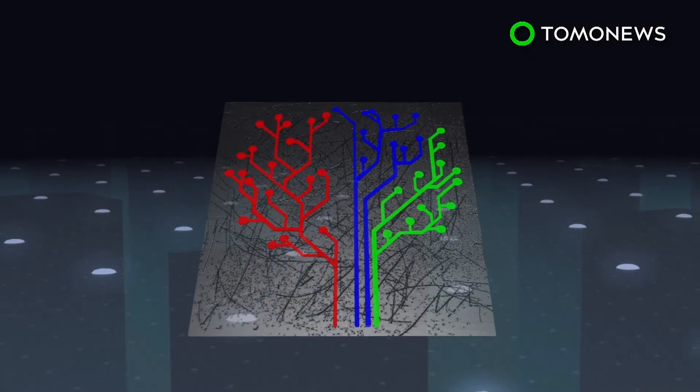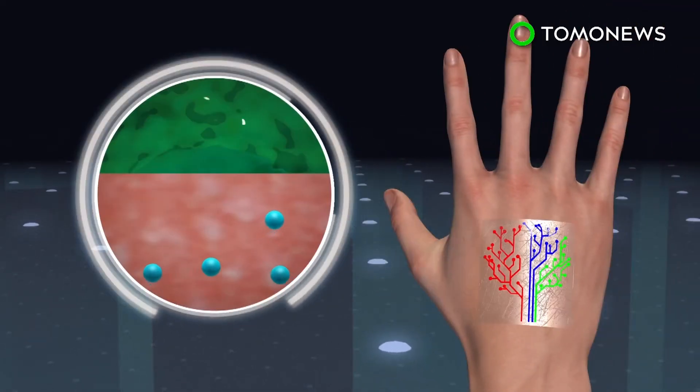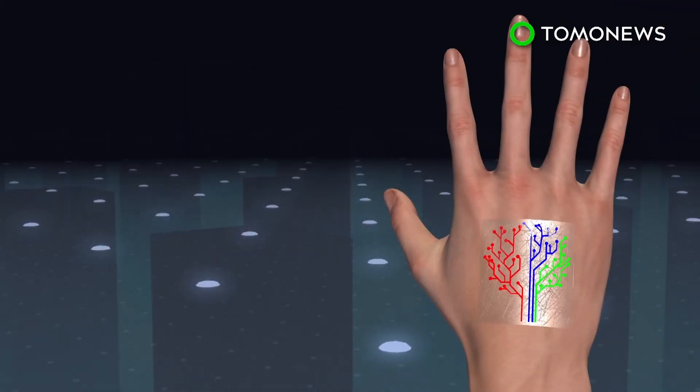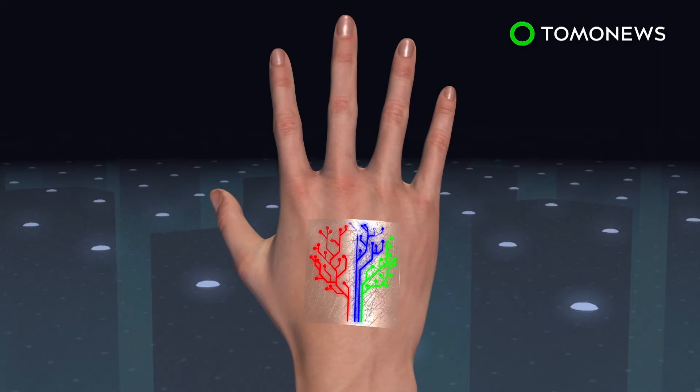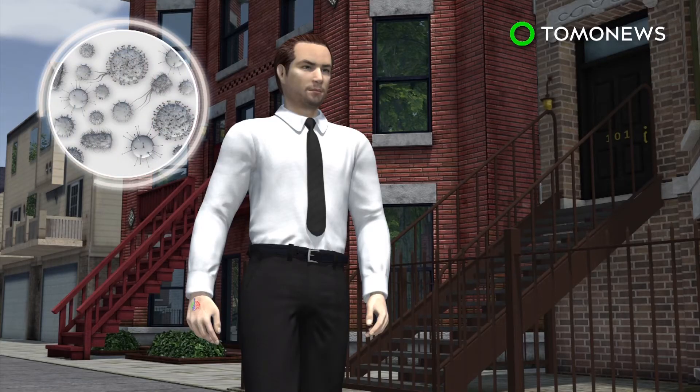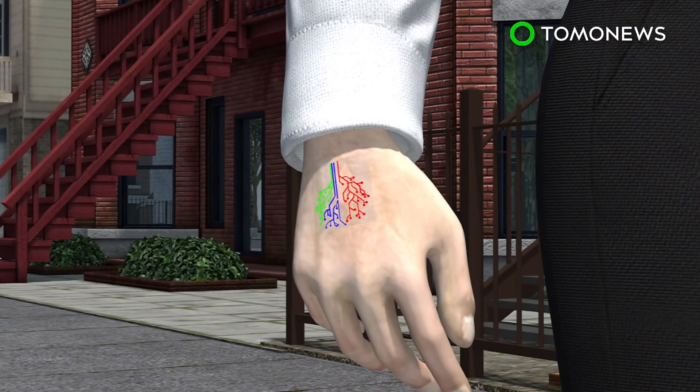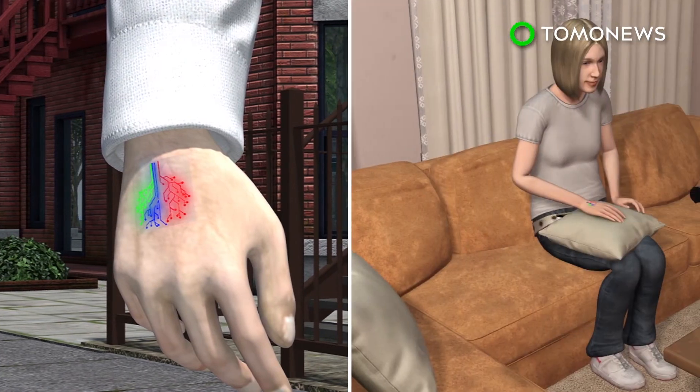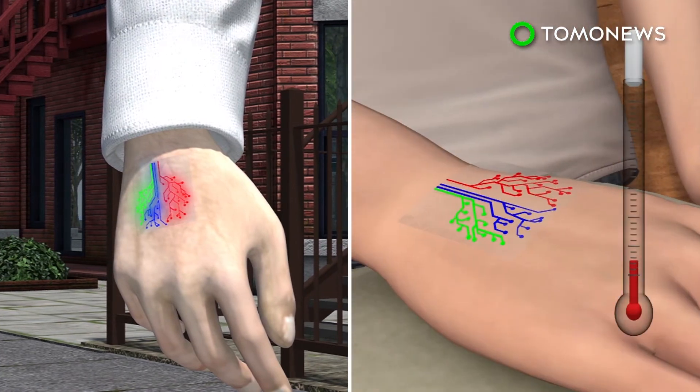When the patch is placed over skin that had been exposed to the chemical stimuli, the bacteria sense the chemicals and cause branches of the tree tattoo to light up. The living tattoo has numerous applications and can be used to sense pollutants in the environment or detect changes in body temperature and pH.